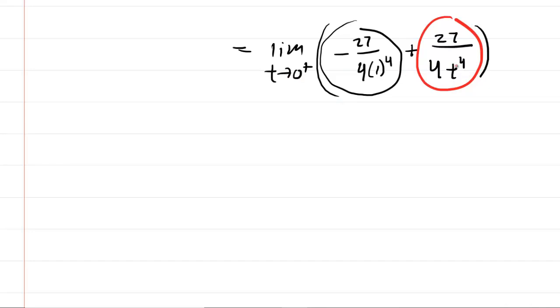So in essence, we're still plugging zero in for t after integrating the expression. So we're actually still going to be left with 27 over zero. So let's take a look at that more carefully.